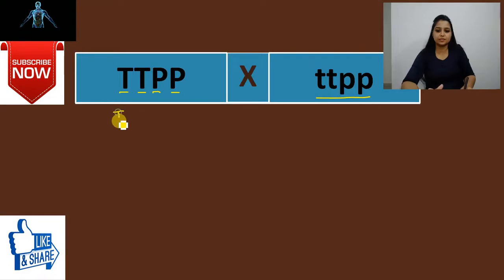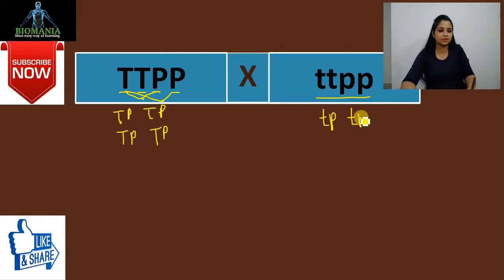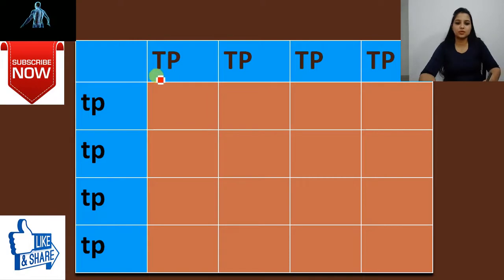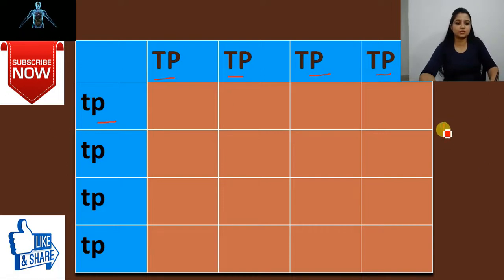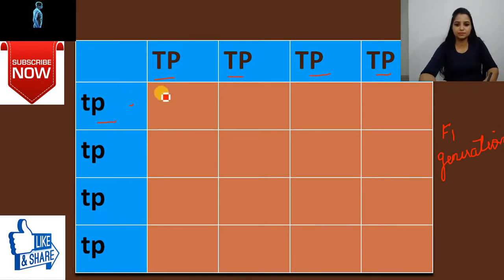For the dominant parent, T will go with P, so the gamete formed is TP, and all four gametes are the same — TP. For the recessive parent, all gametes are tp. When these cross, the progeny is called the F1 generation. When TP gamete crosses with tp gamete, the result is capital T, lowercase t, capital P, lowercase p.